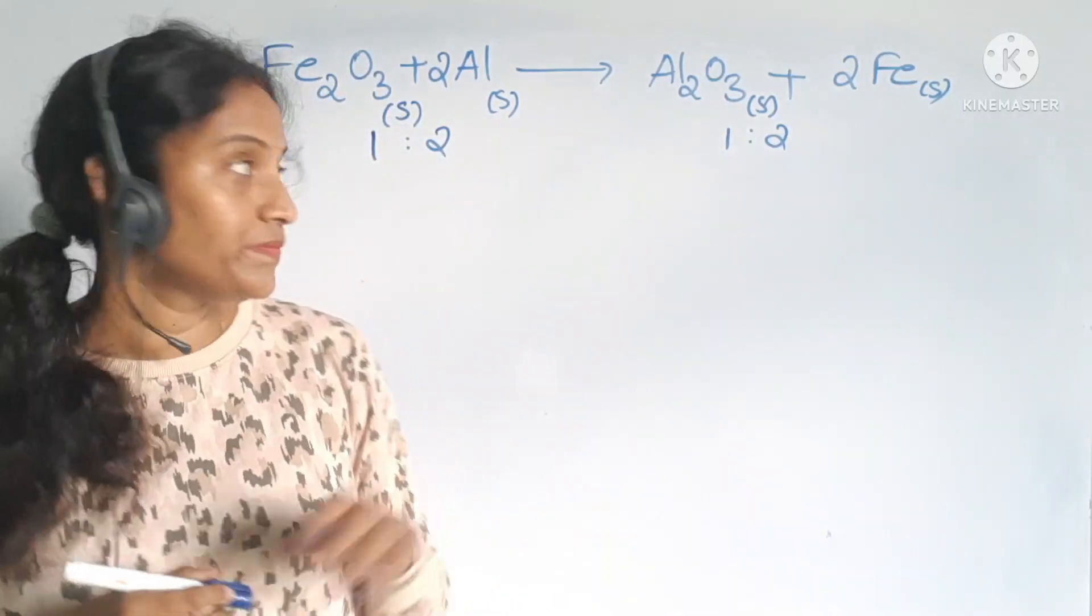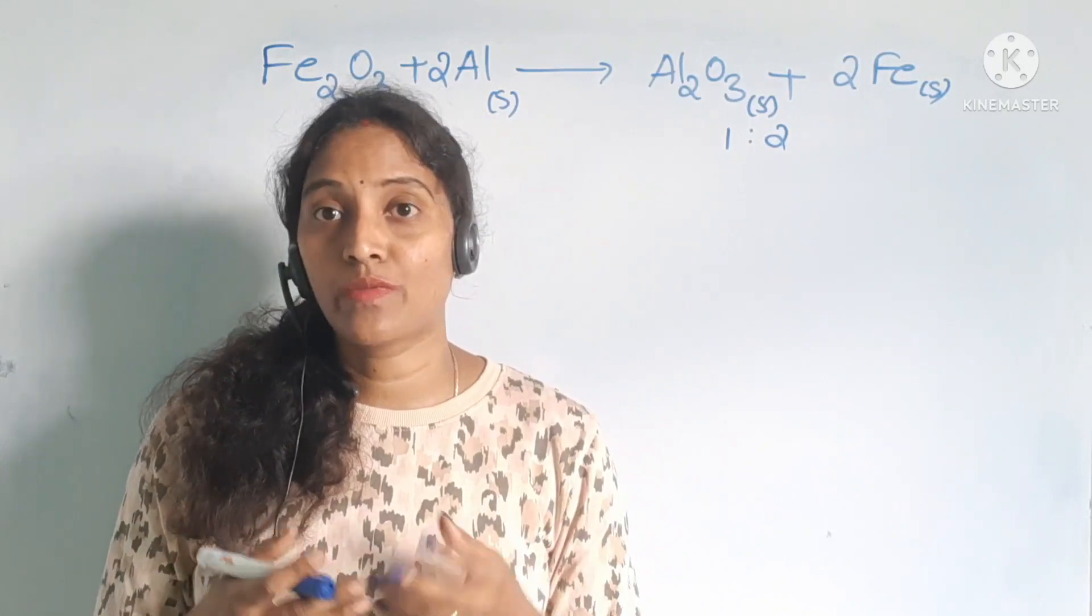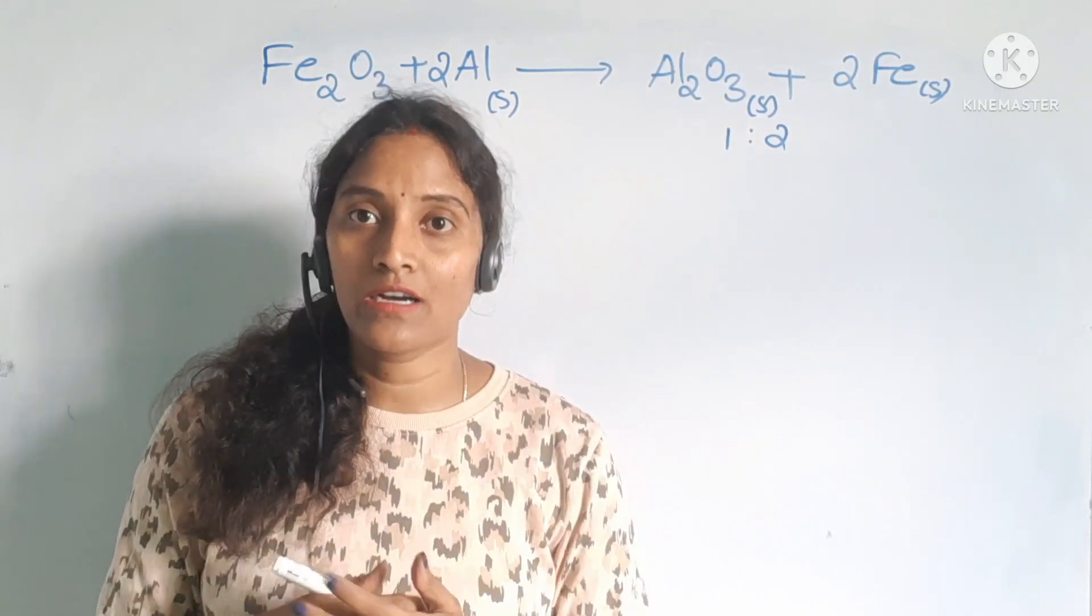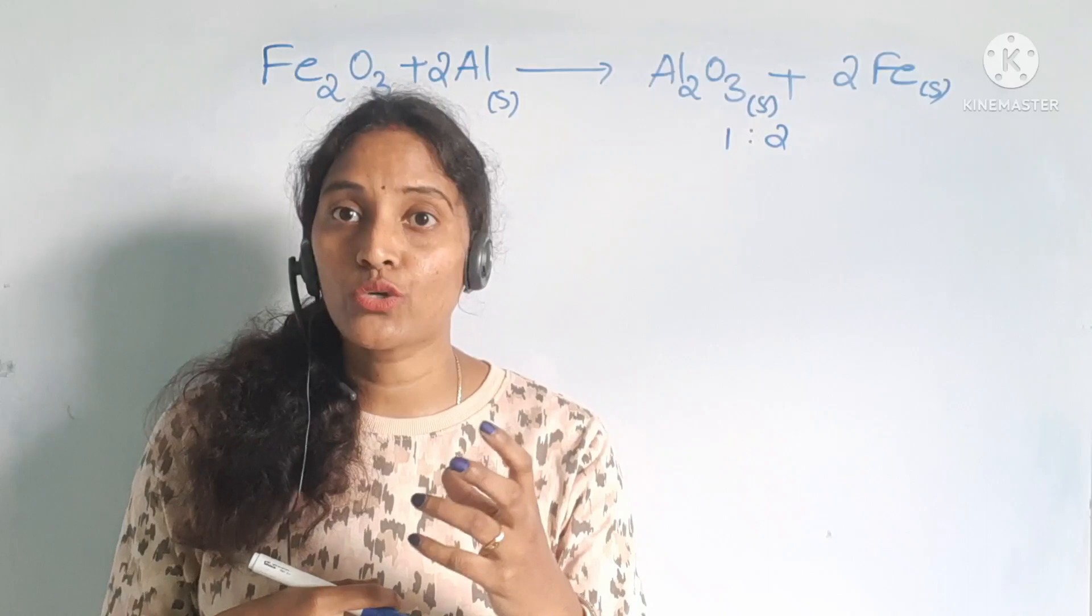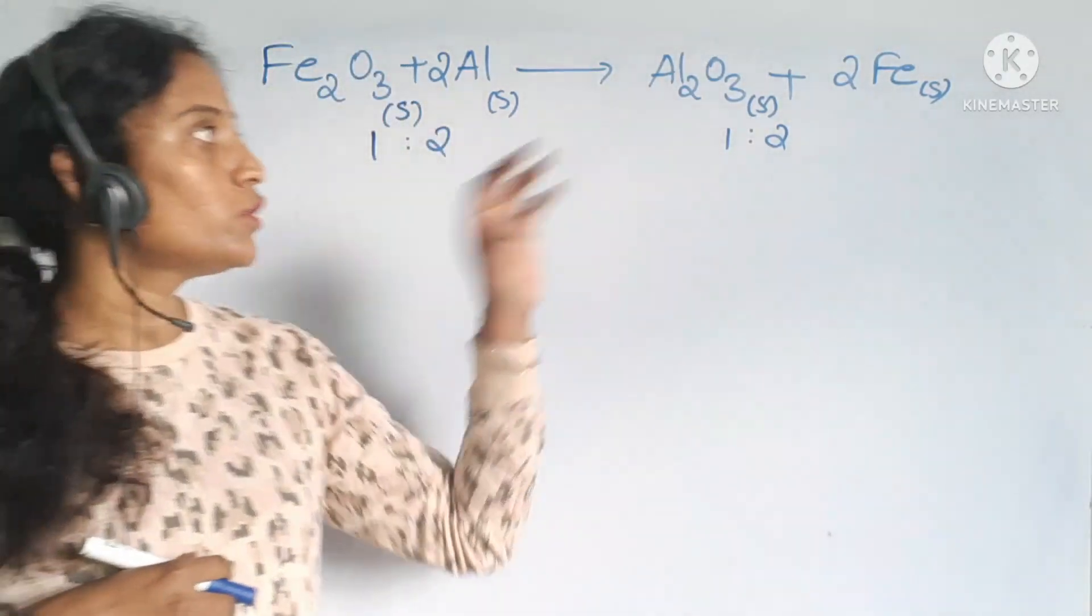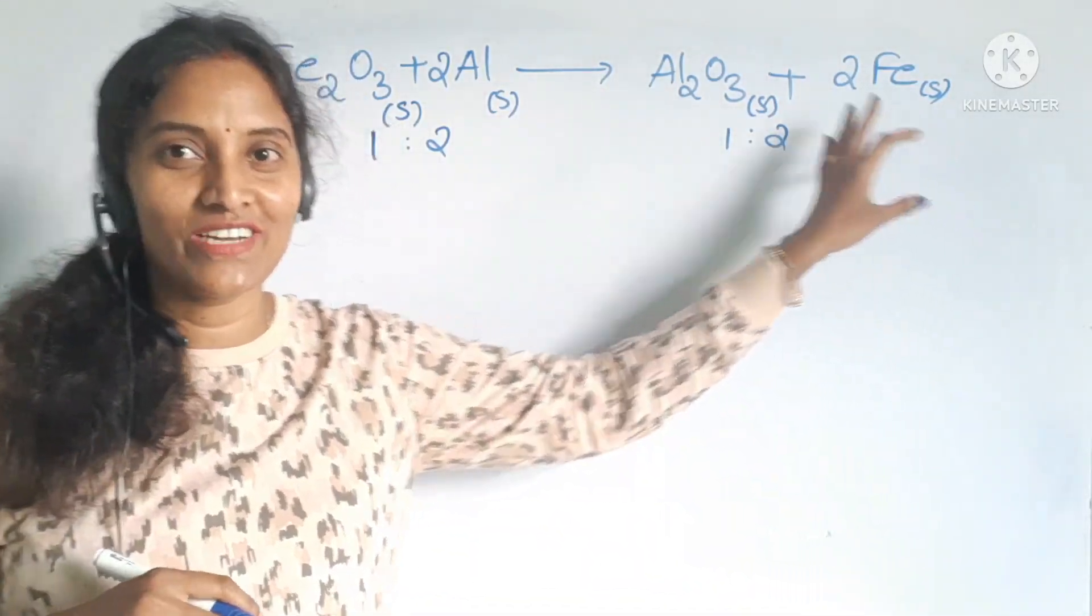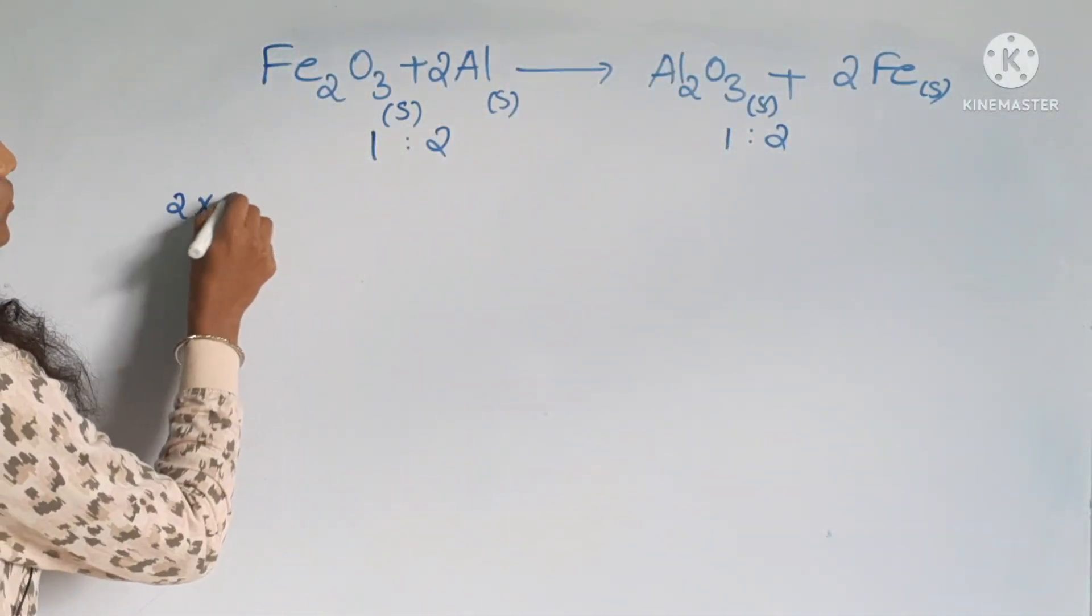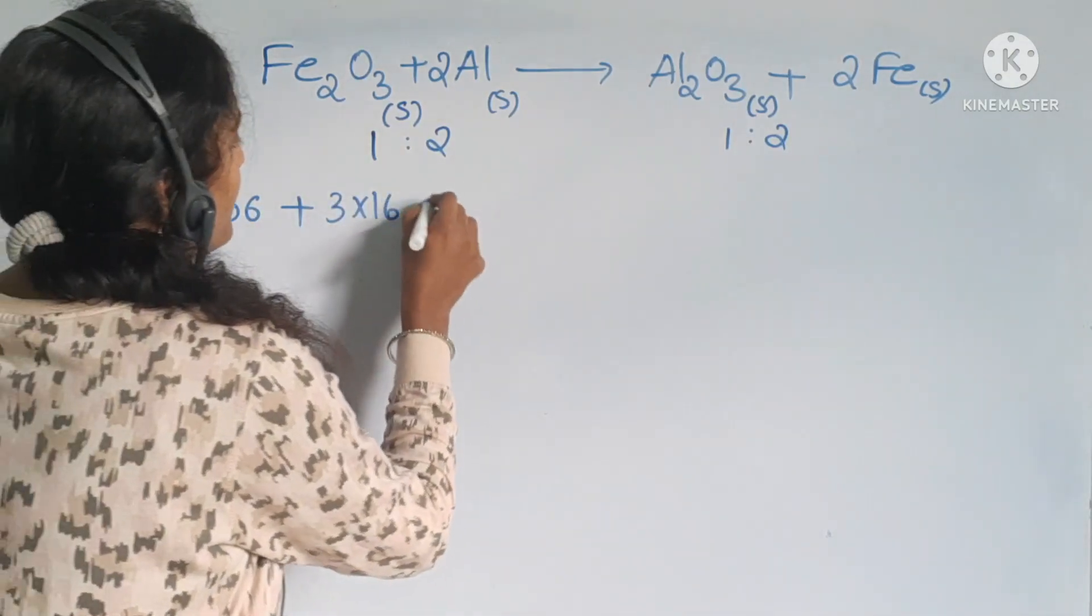And the third thing is, we already know masses of compounds or atoms or molecules are expressed as unified masses. If you know unified mass of any particular substance, we can easily write them into their gram molecular mass or gram atomic mass. To write their unified mass, you should need to know their atomic masses or atomic weights. Here, iron atomic mass is 56. So 2 into 56 plus 3 into 16, this is one thing.